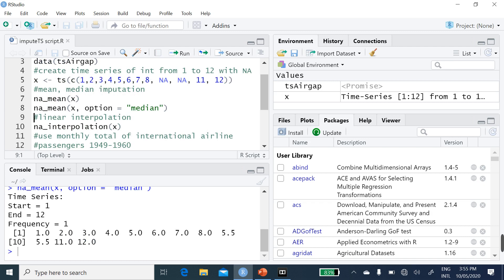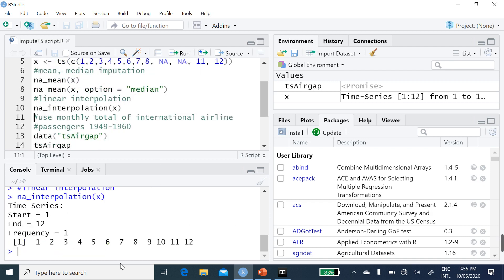In terms of linear interpolation, I say it's na.interpolation x, then you run it. I can now say that for linear interpolation, we have 1 through 12, which the missing values replaced by 9 and 10.